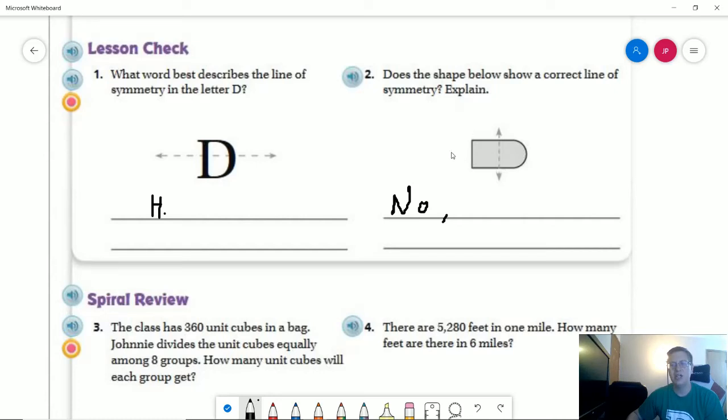If we had drawn the line through the middle horizontally instead of vertically, our vertical line doesn't give us symmetry, but our horizontal line, if we went through the middle, would give us mirror opposites of each other.